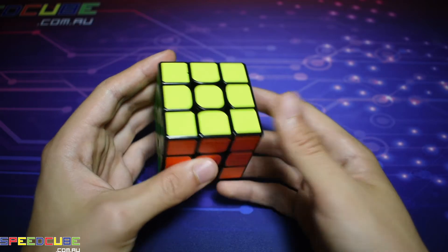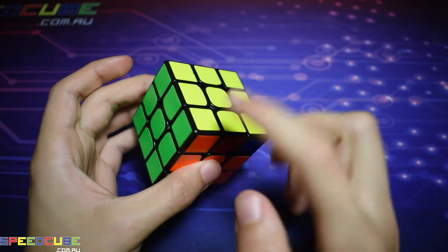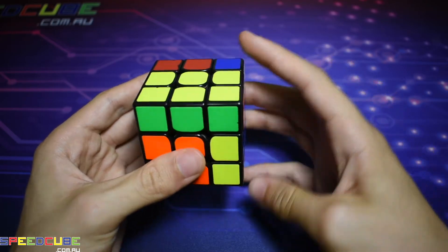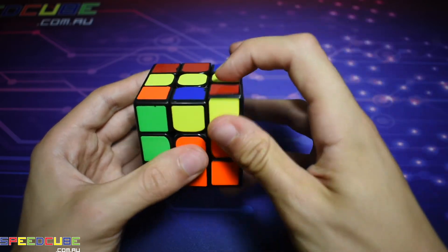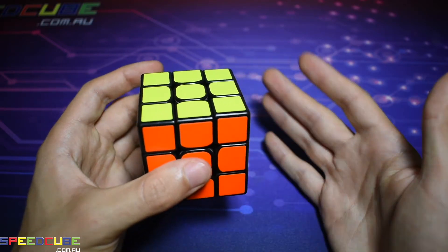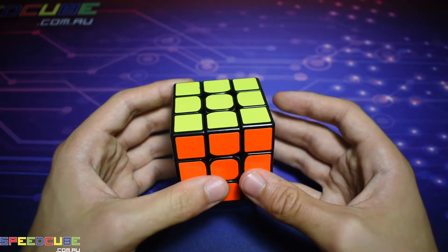That solves the F perm. You may notice that all that algorithm actually came down to was a three-move setup to the T-perm and then undoing those three-move setups. So if you already know the T-perm, that can be quite easy to learn.